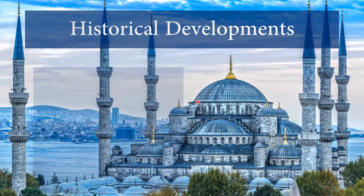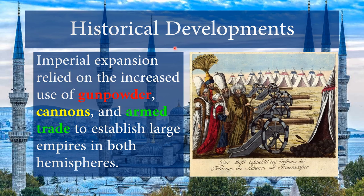The first historical development: gunpowder. Imperial expansion relied on the increased use of gunpowder, cannons, and armed trade to establish large empires in both hemispheres. When the Russians conquer into the steppes and Siberia, they're doing that with gunpowder. More importantly, you should know about the various gunpowder empires — the Ottomans, the Safavids, the Mughals — their conquest comes with the use of gunpowder.